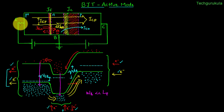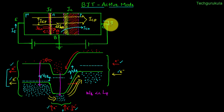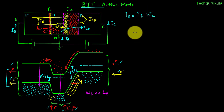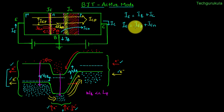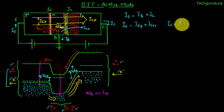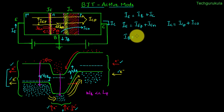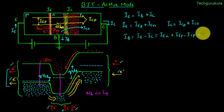The emitter current I_E flows into the device. Current coming out of the collector is I_C and current coming out of the base is I_B. The total current flowing into the device equals total current flowing out, so I_E equals I_B plus I_C. The emitter current I_E can be written as I_EP plus I_EN, where I_EP is the emitter hole current and I_EN is the emitter electron current. The collector current I_C equals I_CP plus I_C0. From this, the base current I_B equals I_E minus I_C, which equals I_EN plus I_EP minus I_CP minus I_C0.